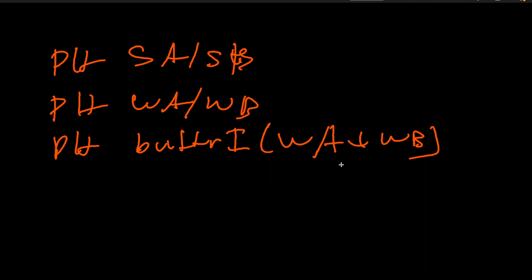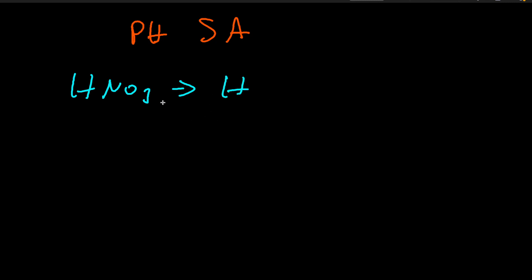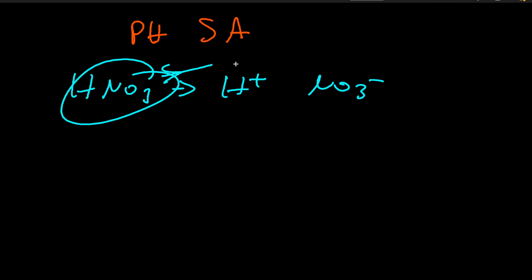So let's look at how we can find the pH of a strong acid first. Let's choose HNO₃. If it's in solution, it will break up completely because it's a strong acid — into H⁺ and NO₃⁻. Let's say the concentration given is 0.04 M.